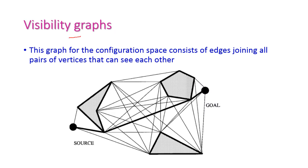Visibility graph is the first method of skeletonization. This graph for configuration space consists of edges joining all pairs of vertices. Vertices are connected with many edges so we can identify more paths from source to destination. The path is clearly visible, and we can directly reach the goal.